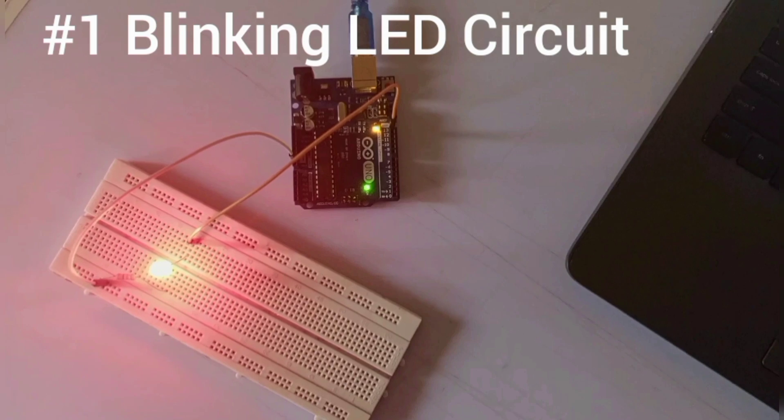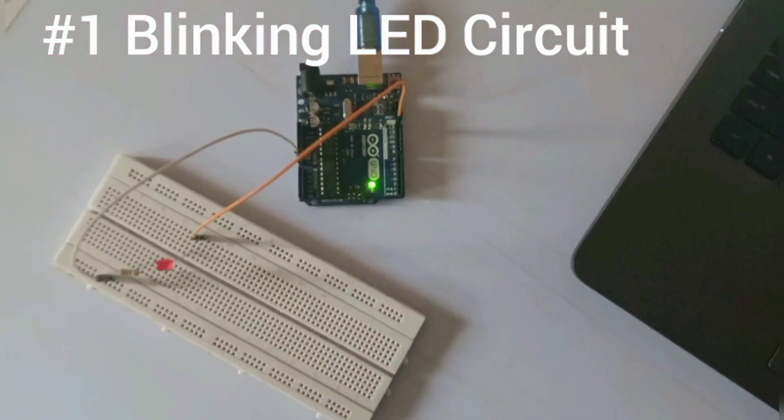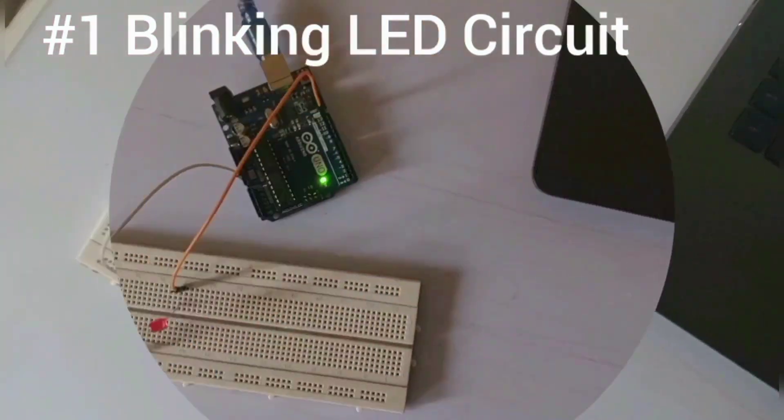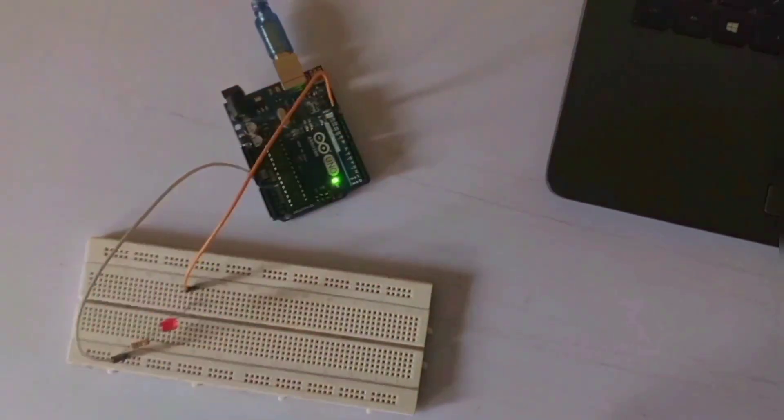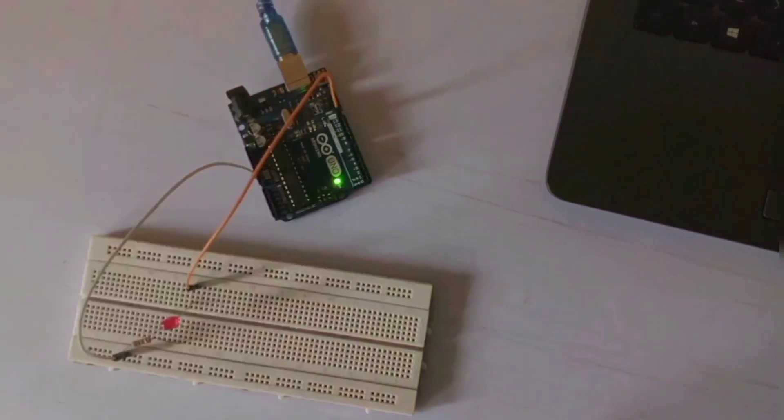The first basic electronic circuit for embedded systems engineers is the LED blinking circuit. The blinking LED circuit is the hello world of electronics. It introduces you to current flow, resistance, and timing. So one resistor, one LED, and your code controls light.